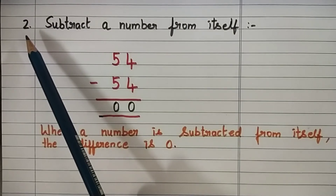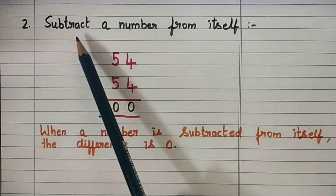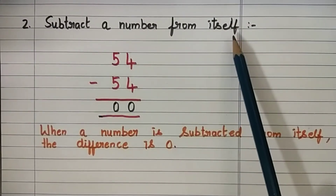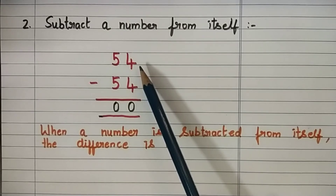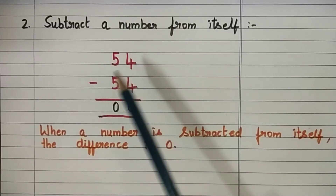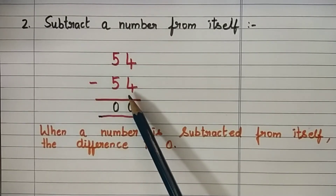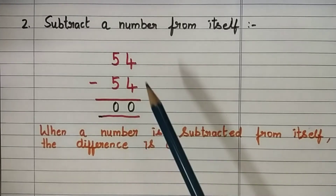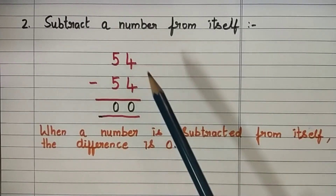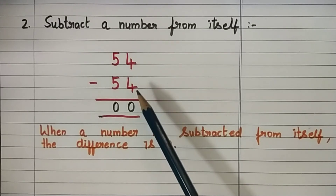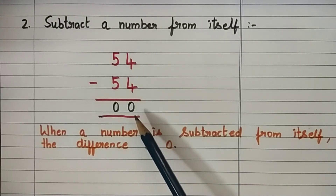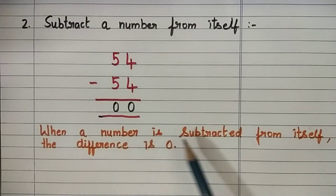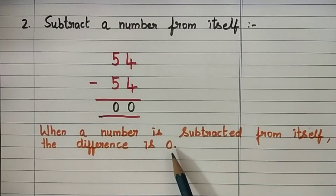Let us see the second property: subtract a number from itself. Let us take the number 54 minus 54. We get the difference 0. When we subtract any number from itself, we get the difference 0. This tells us that when a number is subtracted from itself, the difference is 0.